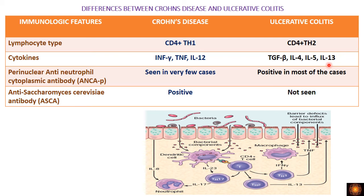Specific antibodies also help differentiate the two conditions. Perinuclear antineutrophil cytoplasmic antibody (pANCA) is most commonly seen in ulcerative colitis, while anti-Saccharomyces cerevisiae antibody (ASCA) is specifically seen in Crohn's disease. These are the key immunological differences between Crohn's disease and ulcerative colitis.